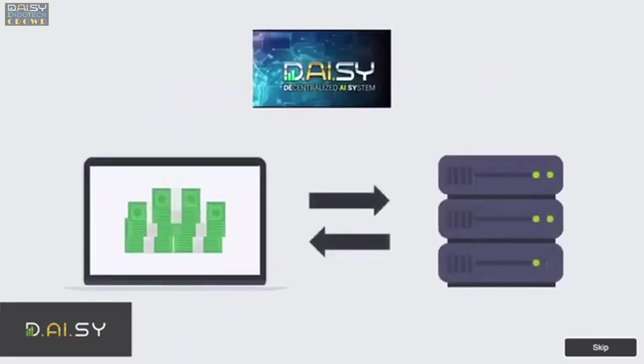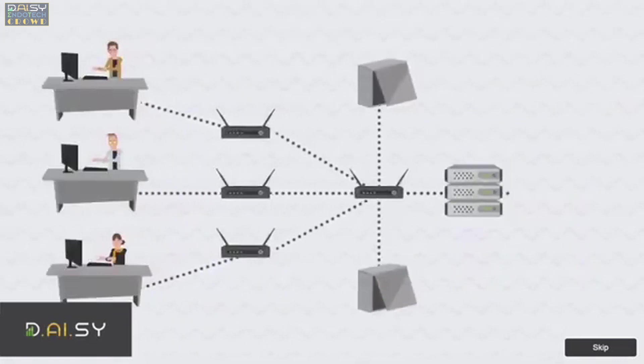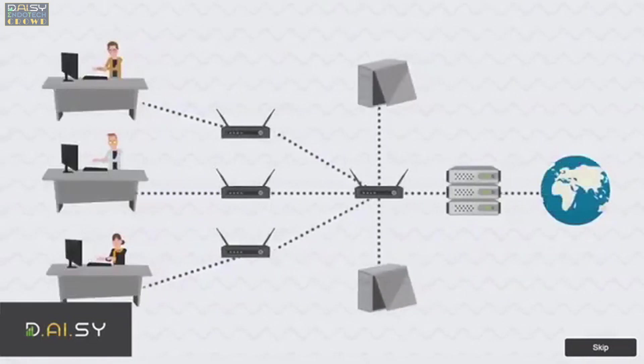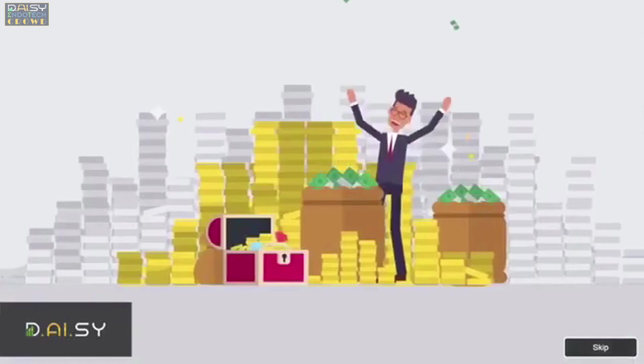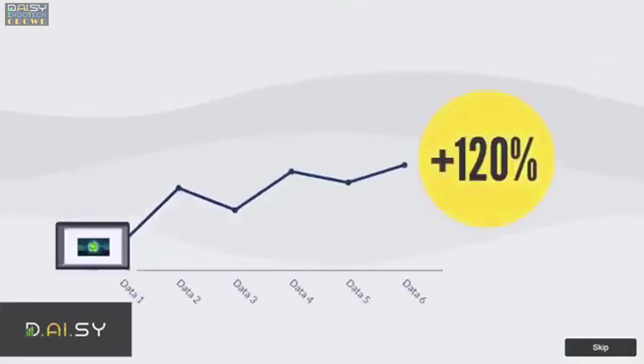This powerful bonus gives you a share of every single transaction on the Daisy smart contract. Whenever someone in the world joins or upgrades their contribution to Daisy, which means you can literally get paid every single minute, and you get a share of every single profitable trade by Endotech.